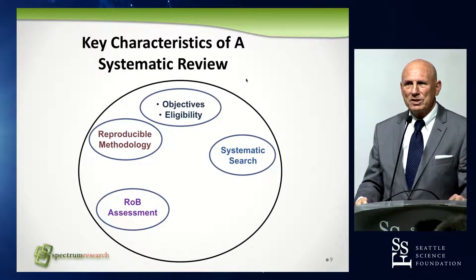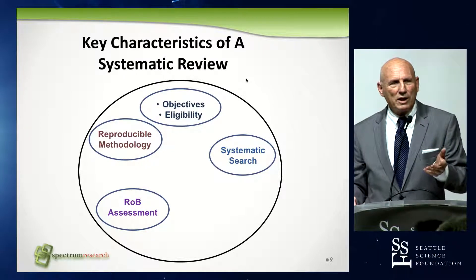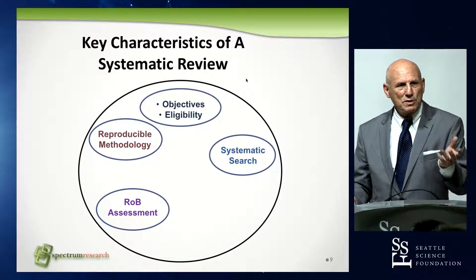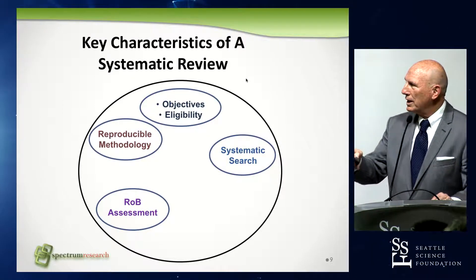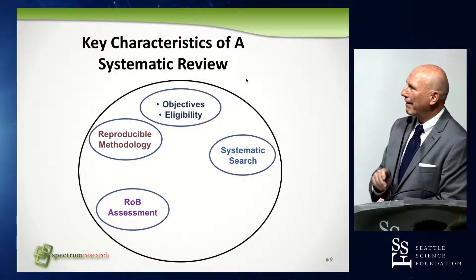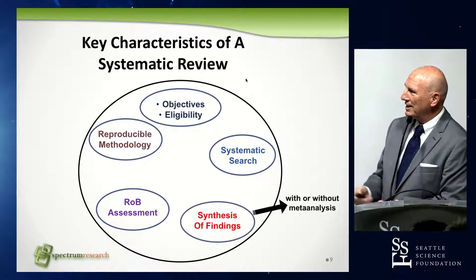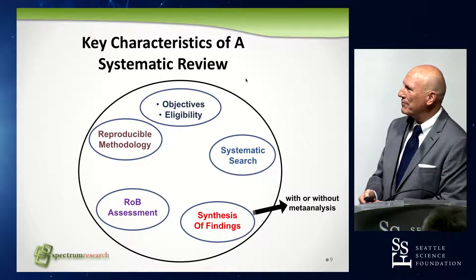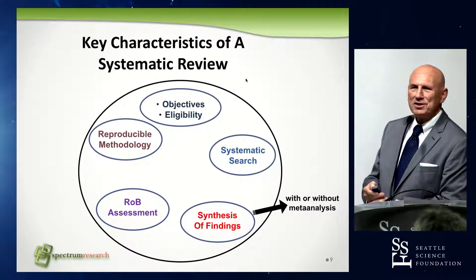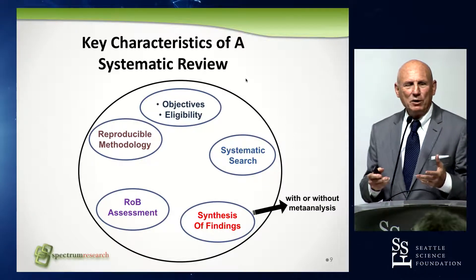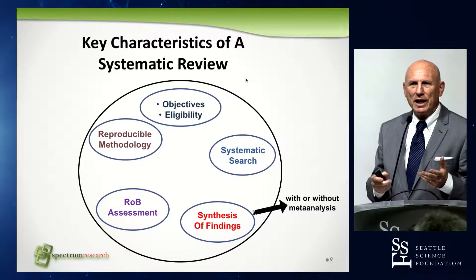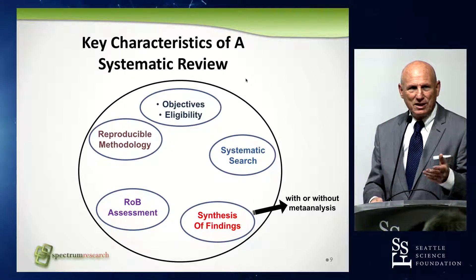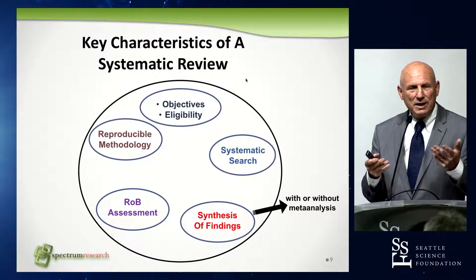Risk of bias is also required. You have to have a risk of bias assessment — you have to understand the quality of the individual articles you're looking at and assess the quality of evidence for those particular articles. Then you have to have synthesis of findings, putting them together in a way that's understandable — quantitatively with a meta-analysis, or qualitatively if you don't have the right criteria for a meta-analysis. But it has to be synthesized.